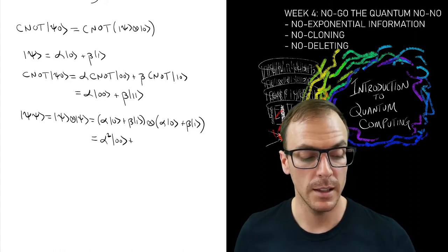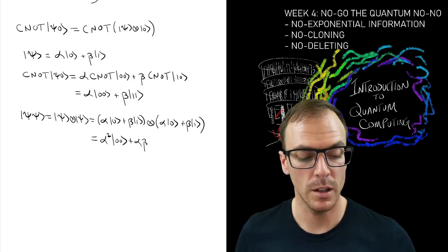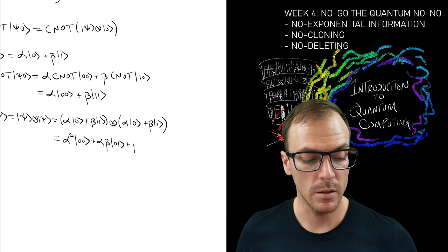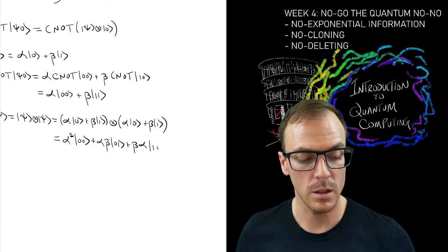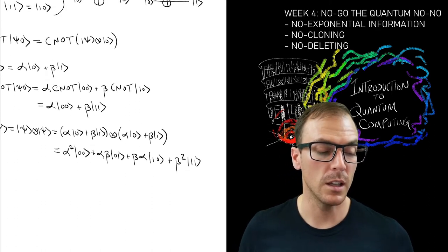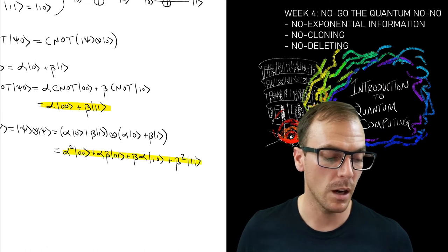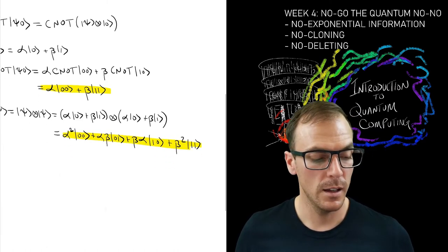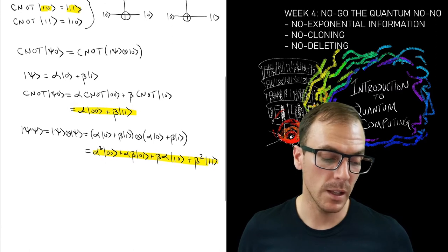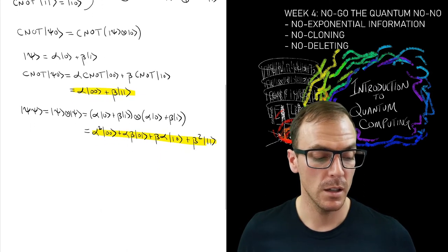We can expand this out, distribute this tensor through these binomials, and we'll get α²|00⟩, then αβ|01⟩, and the next term would be βα|10⟩, and then finally β²|11⟩. That doesn't look anything like the equation above. So the CNOT acts like this whereas we wanted an operation to do this.